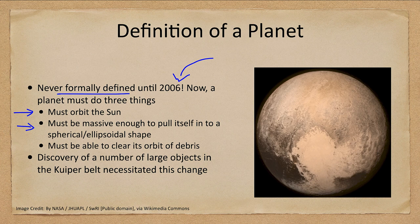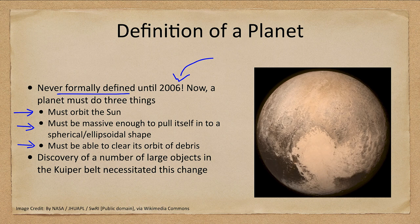Second, it must be massive enough to pull itself into a spherical or ellipsoidal shape under gravity, so its gravity must be dominant enough that it pulls it into that compact shape — it cannot have an irregular shape. Third, it must be able to clear its orbit of debris. Objects in the asteroid belt and the Kuiper belt would not be classified as planets because there is still a lot of debris in those regions.